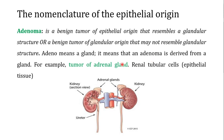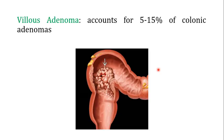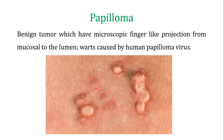An example is the tumor of the adrenal gland. Another example is renal tubular cells, which are of epithelial origin but not glands; if a benign tumor in renal tubular cells assumes the shape of a glandular structure, it is also called an adenoma. The villous adenoma, a colonic adenoma, accounts for 5 to 15 percent of colonic adenomas and can be seen in the colon of human beings.